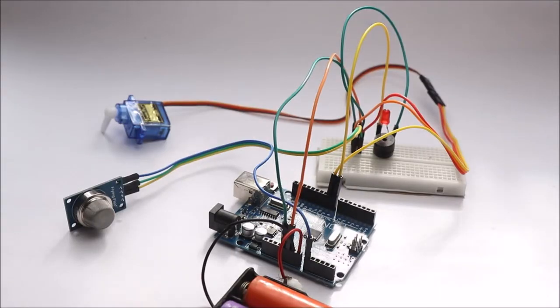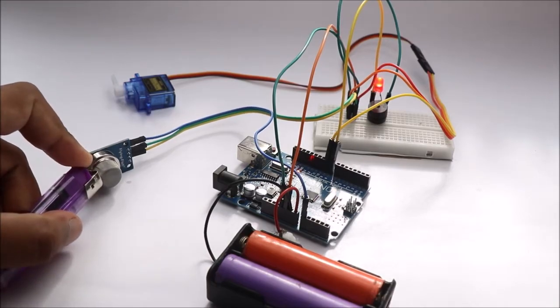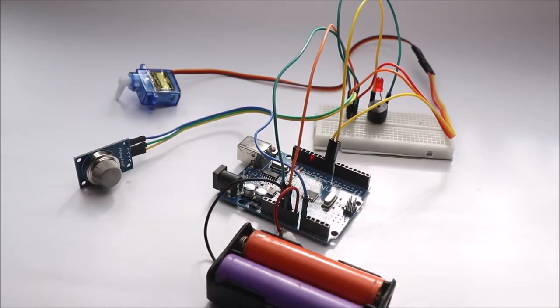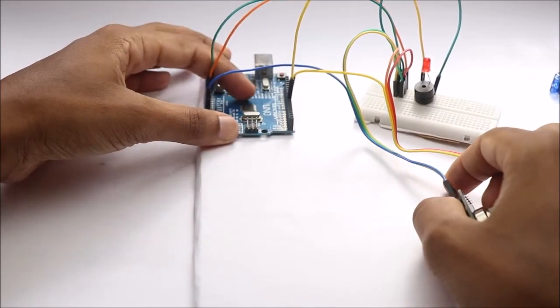After you build the circuit, test it by exposing the sensor to any sort of gas. If everything is good, the buzzer should beep accompanied by red LED light. To make this project look appealing, I will place all the components on a piece of cardboard.